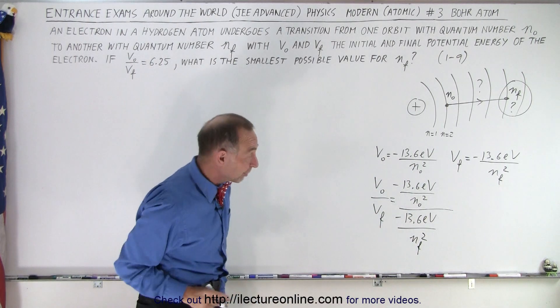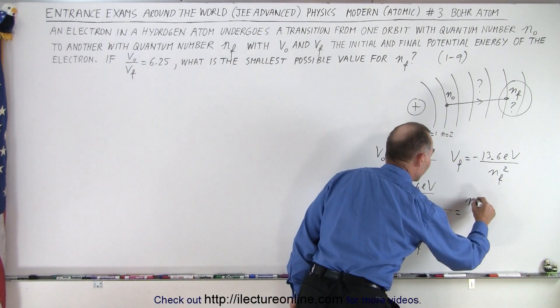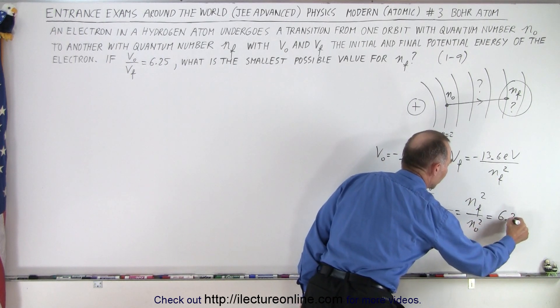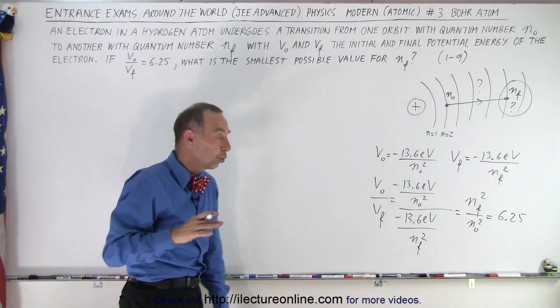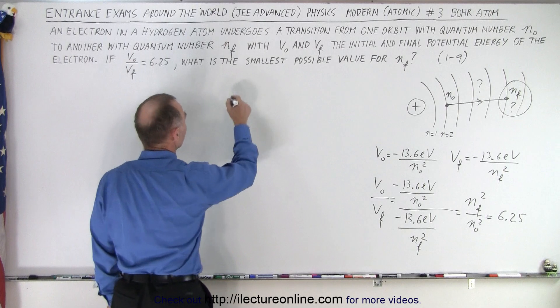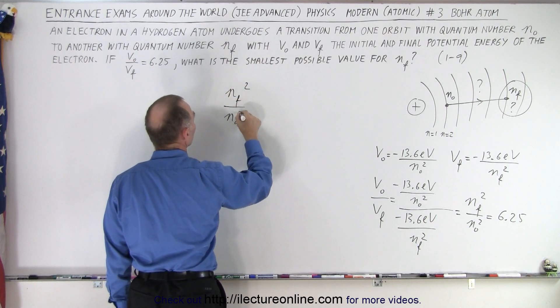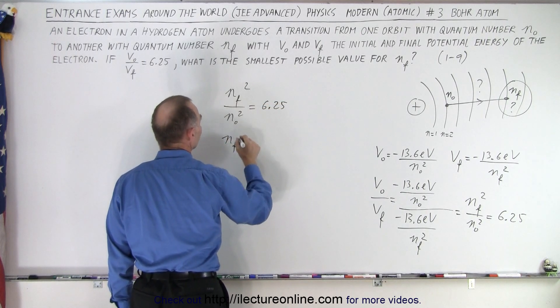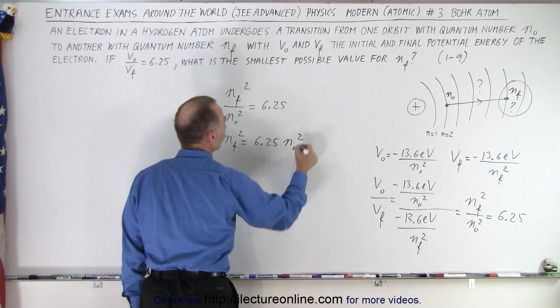Notice the minus 13.6 cancels out, and we end up with a ratio of n_final squared divided by n_initial squared, and we know that's equal to 6.25. So now we have a relationship between the energy levels. Let's write that here. n_final squared divided by n_initial squared equals 6.25, or n_final squared equals 6.25 times n_initial squared.